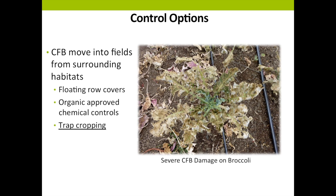Since flea beetles move into fields from surrounding habitats, this really complicates in-field control efforts. Current control options for organic farms include using floating row covers to block access to the crop. However, if a pest insect gets underneath the row cover, it can reproduce without interruption from predators. Another option is organic-approved chemical control, but some of these can kill beneficial insects. So we looked at another option: trap cropping.